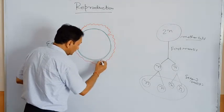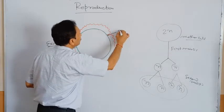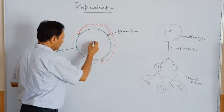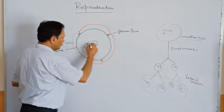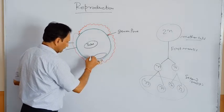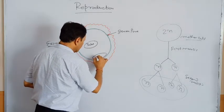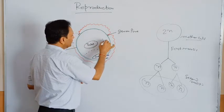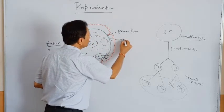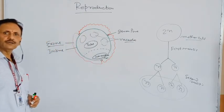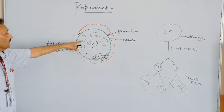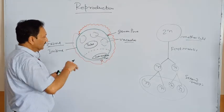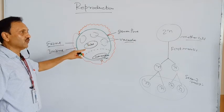The part where the exine is absent is called the germ pore. The pollen grain has two cells: one central cell called the tube cell, and one peripheral cell. In addition, cytoplasm and vacuoles are present — vacuoles are a characteristic feature of the mature plant cell. In the next video, we will discuss how the female gamete is formed.